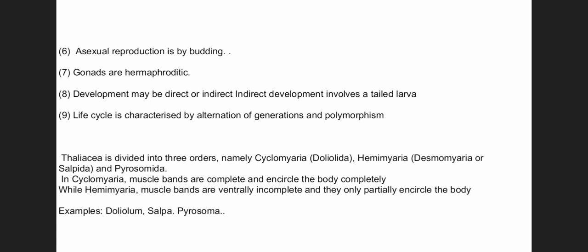Thaliacea is divided into three types: Cyclomyaria or Doliolida, Hemimyaria or Salpida, and Pyrosomida. In Cyclomyaria, muscle bands are complete and they completely encircle the body. In Hemimyaria, muscle bands are ventrally incomplete and they only partially encircle the body. The examples of class Thaliacea are Doliolum, Salpa, and Pyrosoma.